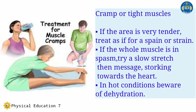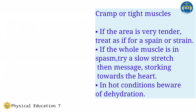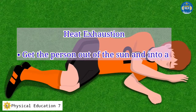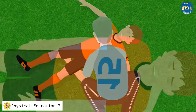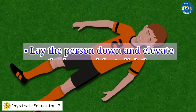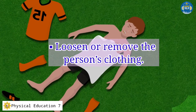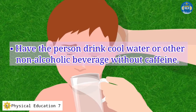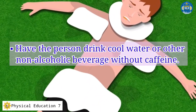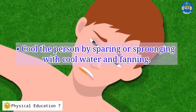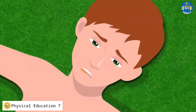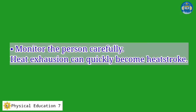If the whole muscle is in spasm, try a slow stretch then massage, stroking towards the heart. In hot conditions, beware of dehydration. For heat exhaustion, get the person out of the sun and into a shady or air-conditioned location. Lay the person down and elevate the legs and feet slightly. Loosen or remove the person's clothing. Have the person drink cold water or other non-alcoholic beverages without caffeine. Cool the person by sponging with cold water and fanning. Monitor the person carefully.